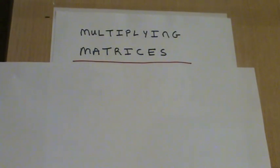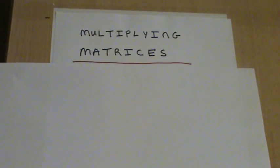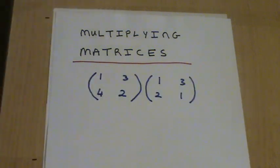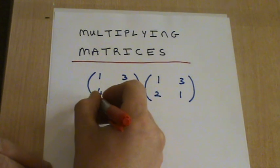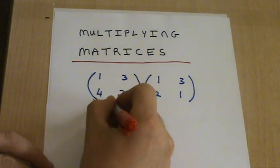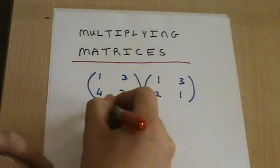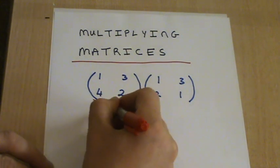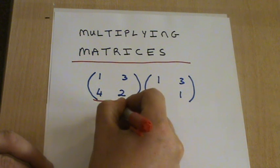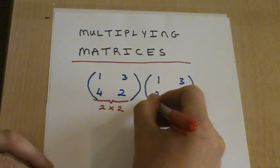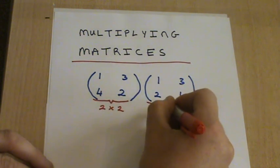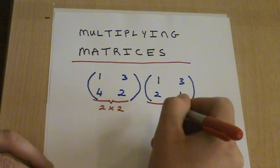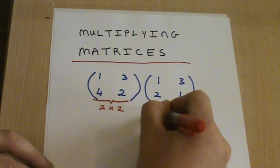Here we're going to look at multiplying two matrices together. The example I've got here is where we've got two 2x2 matrices. This matrix here has got two rows and two columns, hence it's a 2x2 matrix. This matrix is also a 2x2 matrix, so it's got two rows and two columns.